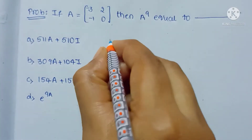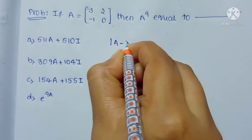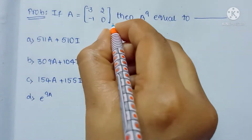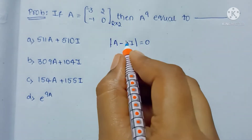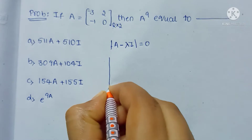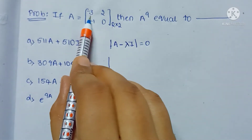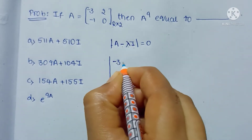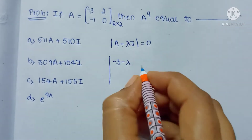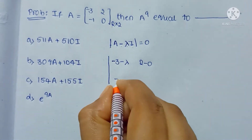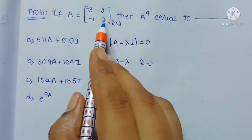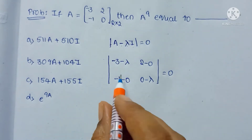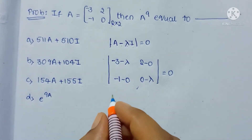We know that the characteristic equation is given by the determinant of A minus lambda I, which is equal to 0. Here A is a 2 by 2 matrix, lambda is a scalar quantity, and I is the identity matrix. So we write A minus lambda I and compute the determinant.